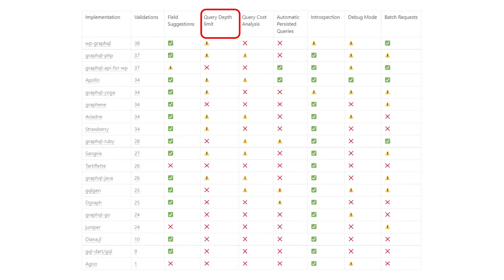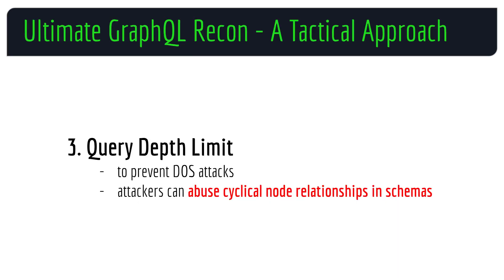Query depth limit — this is in place to prevent denial of service attacks. In misconfigured GraphQL implementations, attackers can abuse cyclical node relationships in schemas, thereby potentially causing DOS.